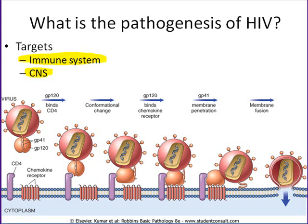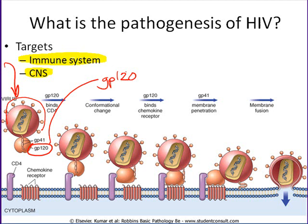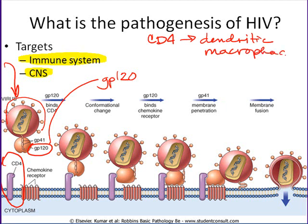Here's the HIV virus, and it has all these antigenic determinants on its surface, including one called GP120, which I'll talk about in just a second. It turns out HIV has a very strong affinity — a very strong preference — for attachment to CD4 protein. CD4 protein is found on a certain type of T cell, but what you might not know is that CD4 is also found on dendritic cells and macrophages.